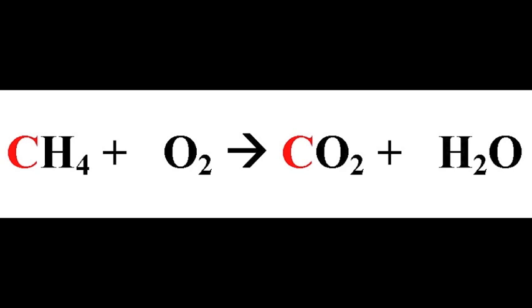You can do this in any order but I always tend to work from left to right. In this case carbon is the first atom I'd like to have a look at. I'm counting how many carbons there are on the left hand side of the equation — in this case one — and then counting how many carbons there are on the right hand side, also one. Because there's one on each side there's no balancing numbers needed with regards to carbon.